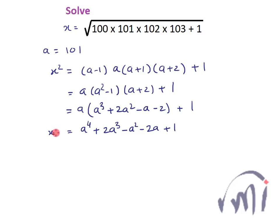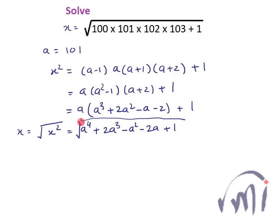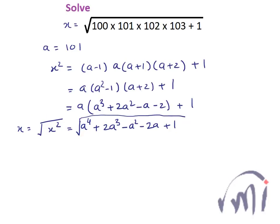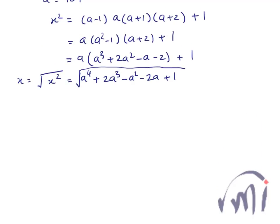So this is equal to x squared, and if I want to find the value of x I have to take the square root of the right-hand side. We will follow Euclid's algorithm, or the division method of finding the square root, applied to the expression a⁴ + 2a³ − a² − 2a + 1.